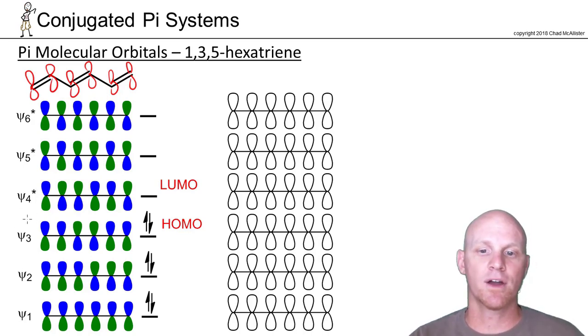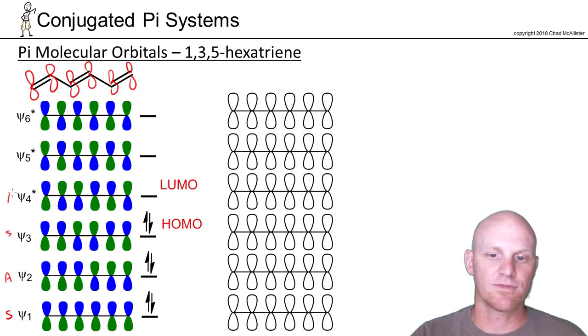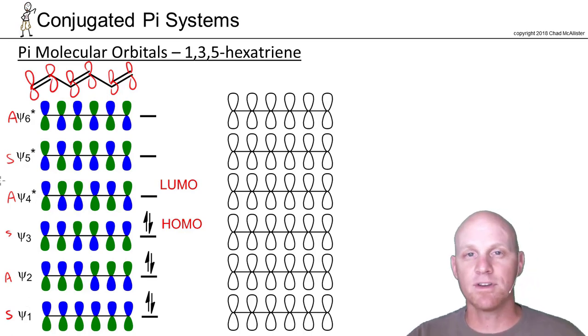The lower half, psi 1 through 3, are bonding. The upper half, psi 4 through 6, are antibonding. You'll see they alternate. So psi 1 is symmetric, then antisymmetric, psi 3 is symmetric, psi 4 is antisymmetric, psi 5 is symmetric, psi 6 is antisymmetric. So notice all the odd number ones are symmetric, all the even number ones are antisymmetric. That will be important again later in this chapter.